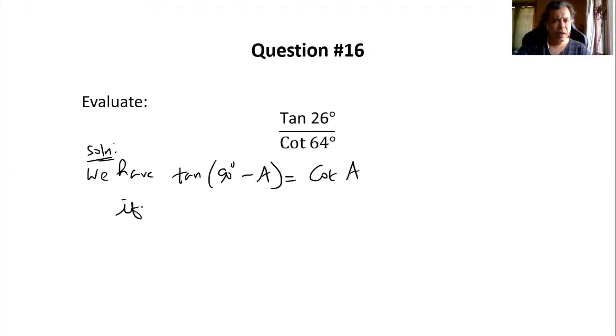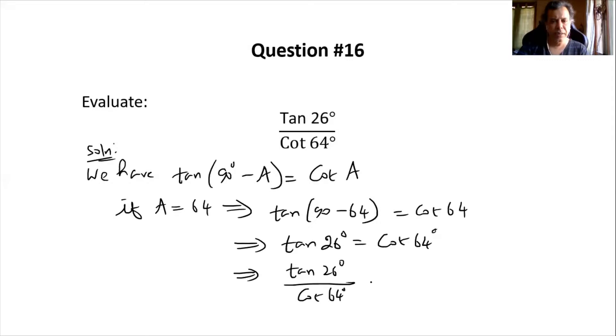So if A is replaced with 64, then this will become tan 90 minus 64 is equal to cot 64, or tan of 26 degrees is equal to cot of 64 degrees. Dividing both sides by cot 64, we will have tan 26 degrees divided by cot 64 degrees equal to one.